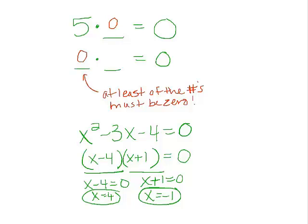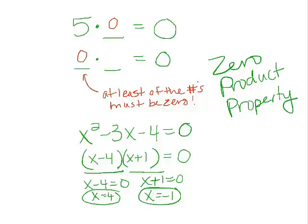The property that allows us to say this is called the 0 product property. And it's very simple. In order to get a product of 0, one of the numbers that you are multiplying by must be 0.